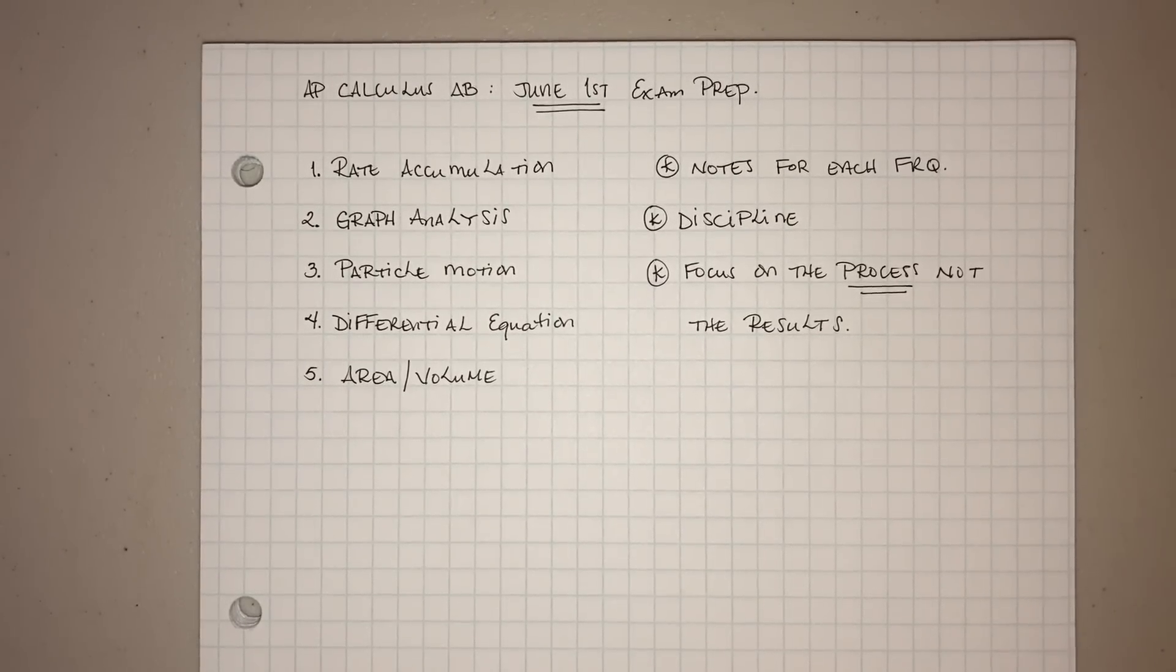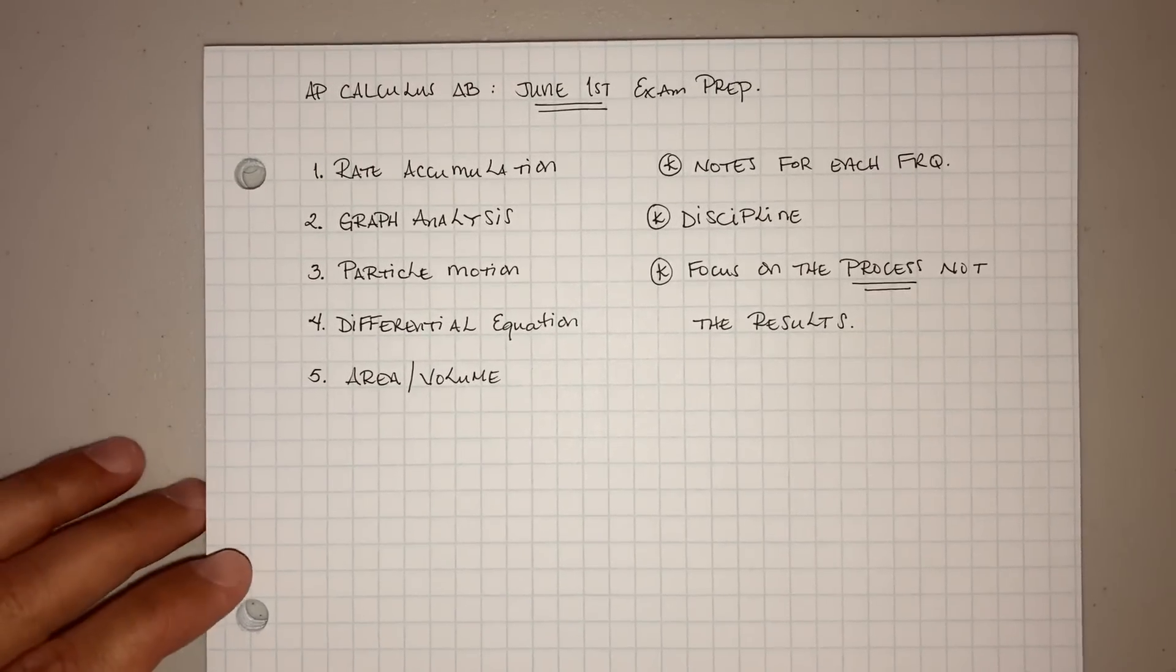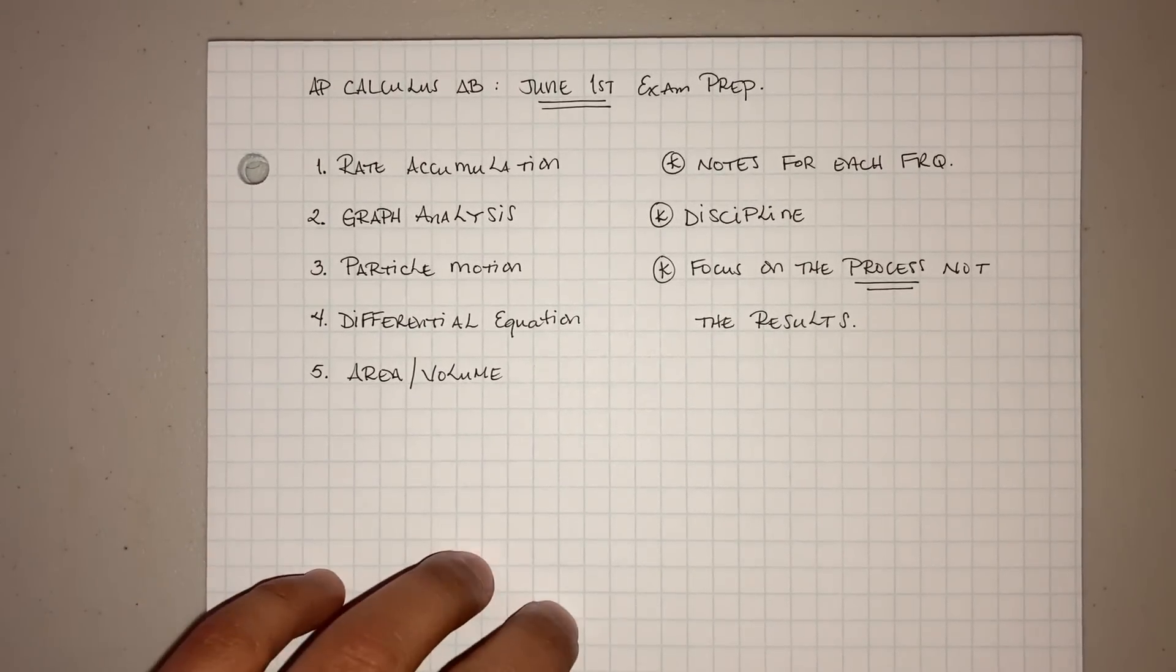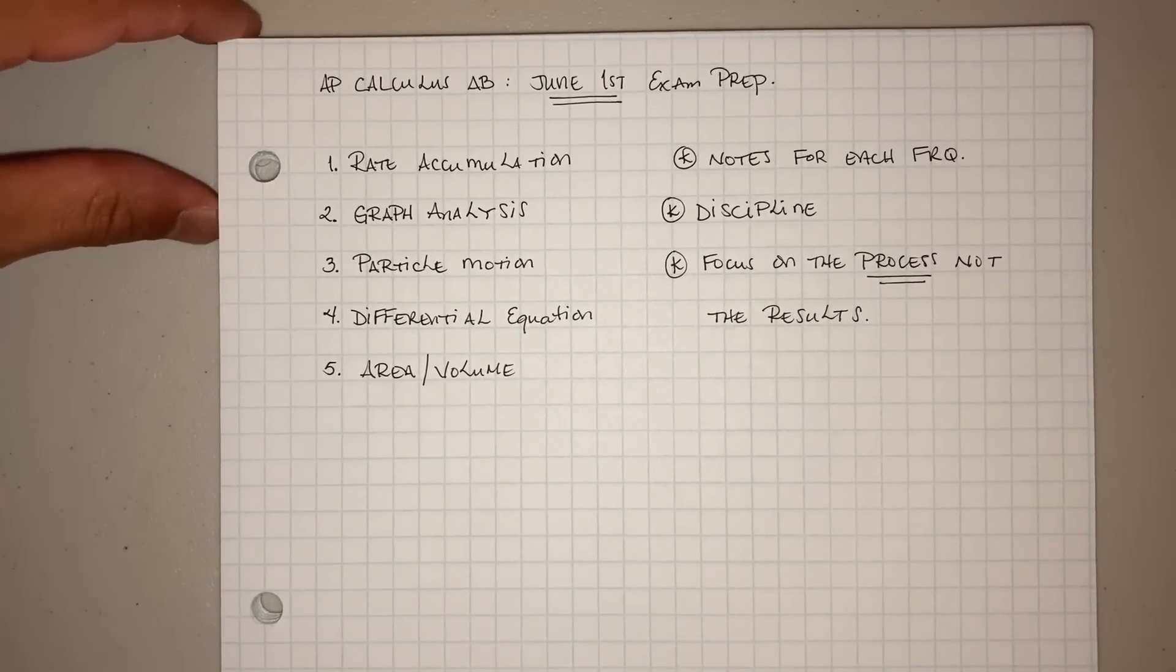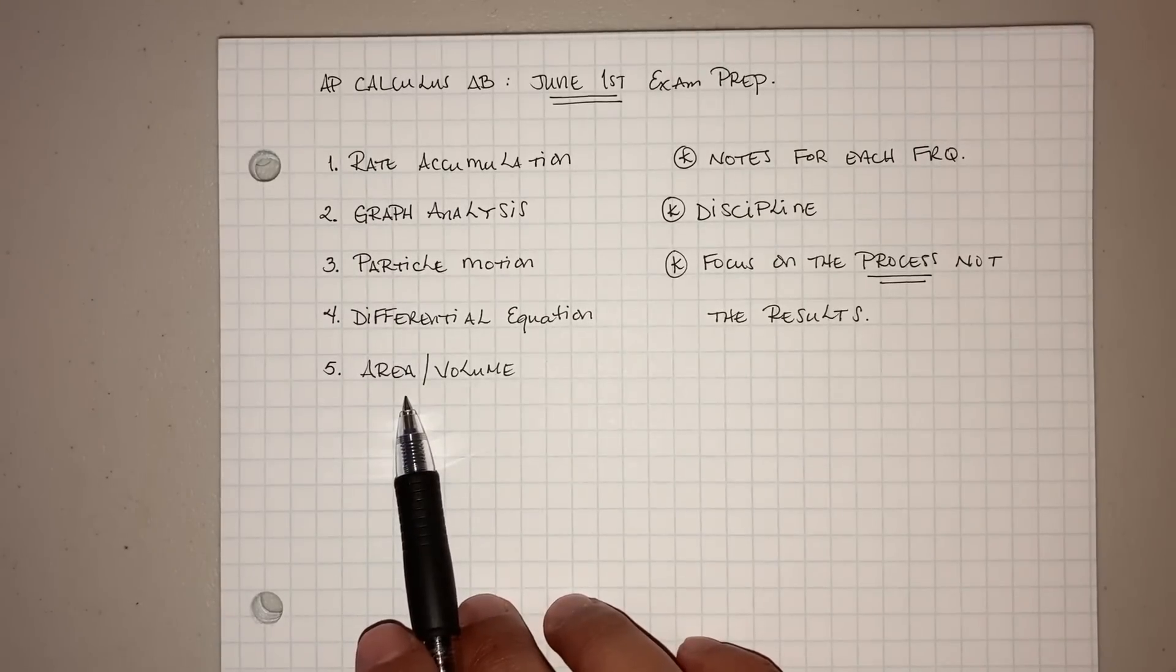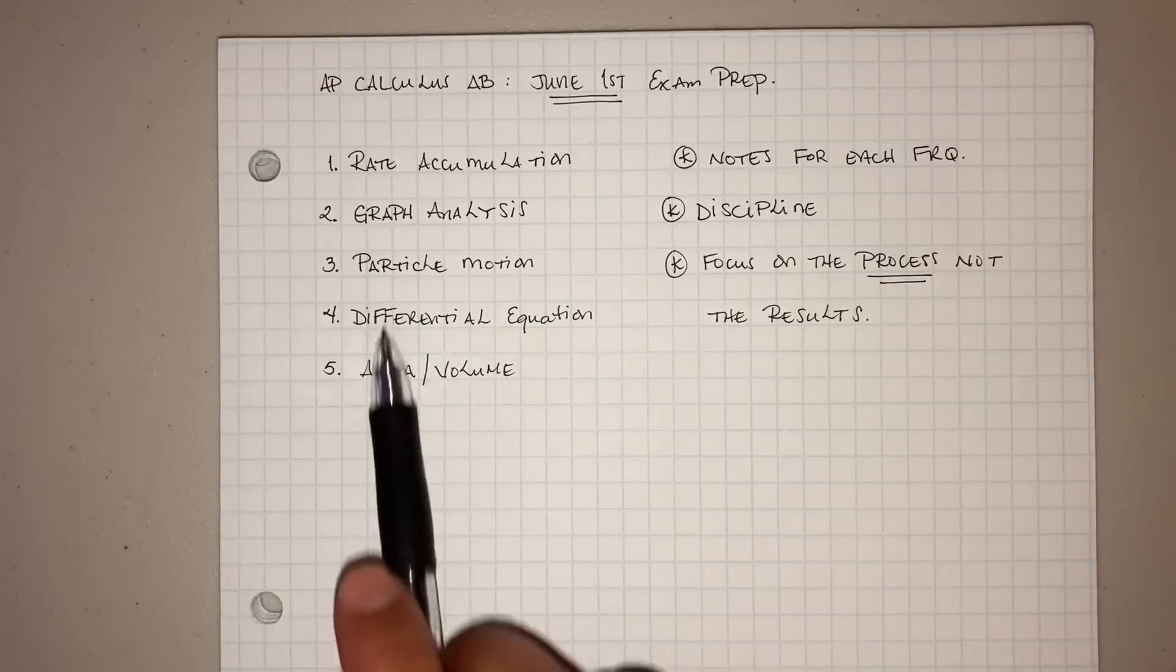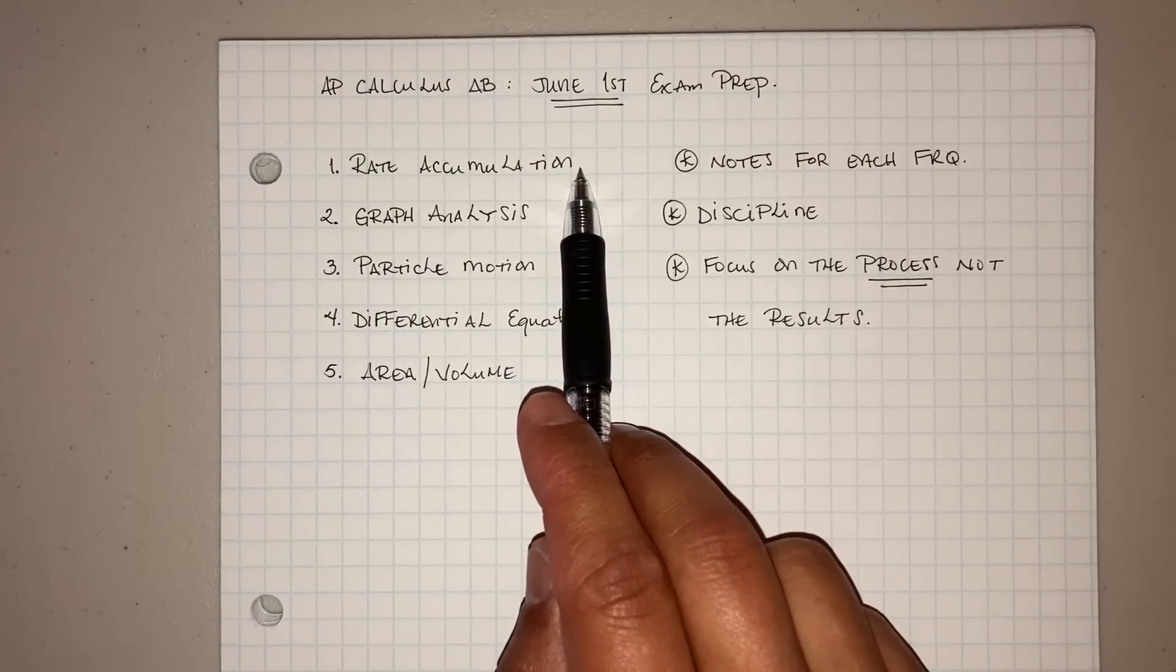For those of you that are just kind of new to my page, welcome. I want to give you a layout and do the best that I can to help you prepare. Now for June 1st, there's basically five types of FRQs that you're going to get, and I put them in order of importance. Rate accumulation - every year you always get one of those.